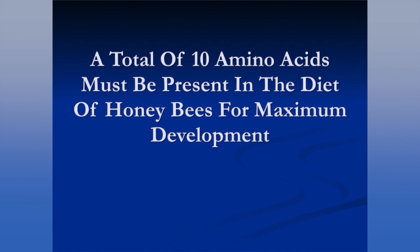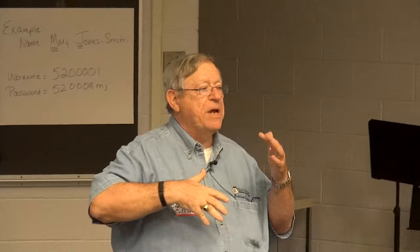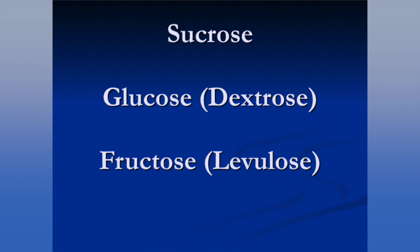There are some 20-plus amino acids, and ten of them are essential in order for bees to reproduce. This is the list of the ten amino acids that are absolutely necessary for reproduction and bee development. Like dandelion, many pollens lack some of these, and that's why it's important to have a mixture of pollens from many different sources, so that within the colony all ten will be present.